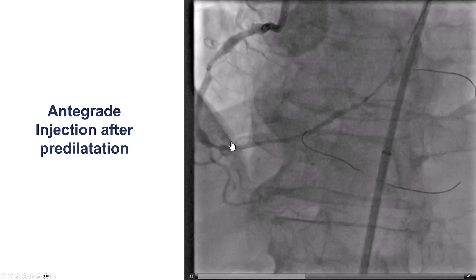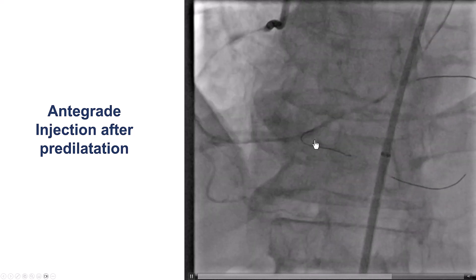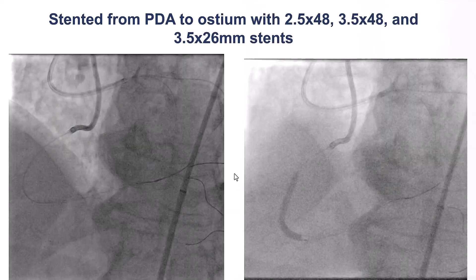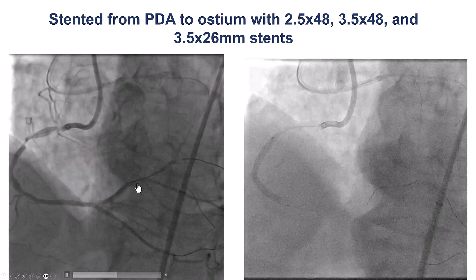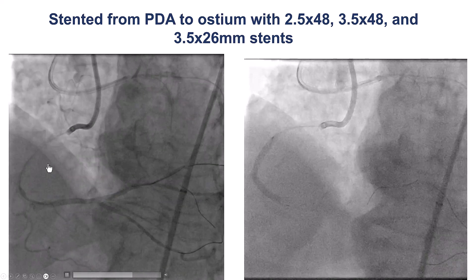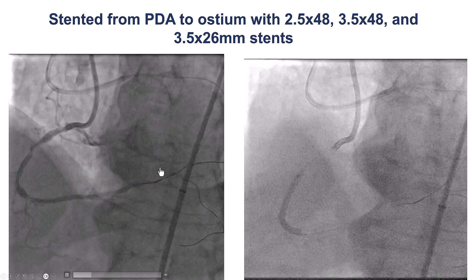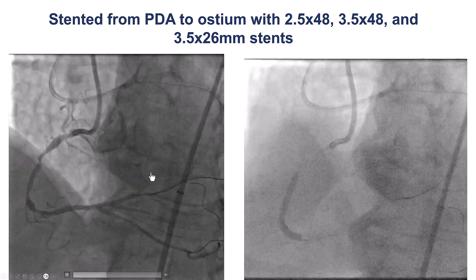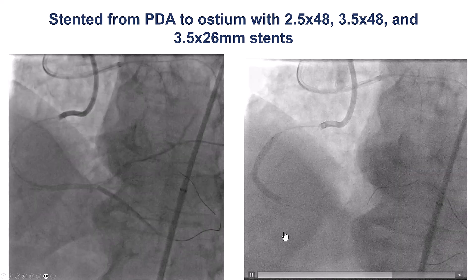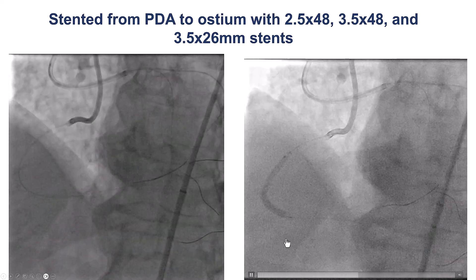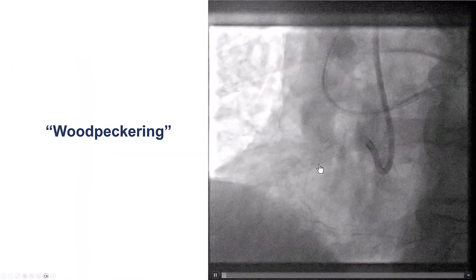We pre-dilated and that restored some antegrade flow. We then removed the retrograde gear — that's very important: you don't want to jail any equipment — and then stented all the way from the PDA to the ostium of the right coronary artery.